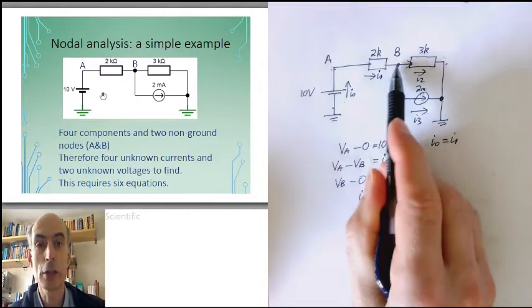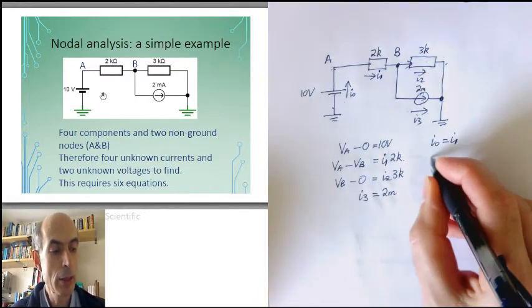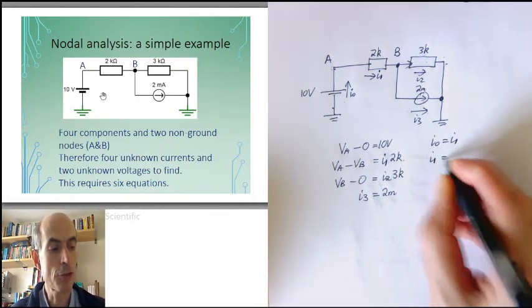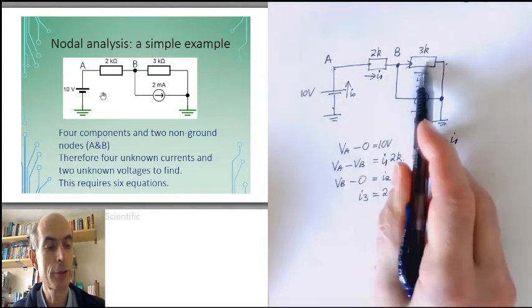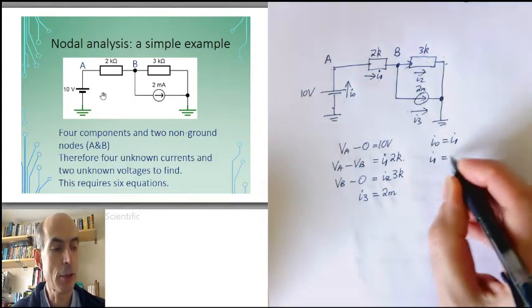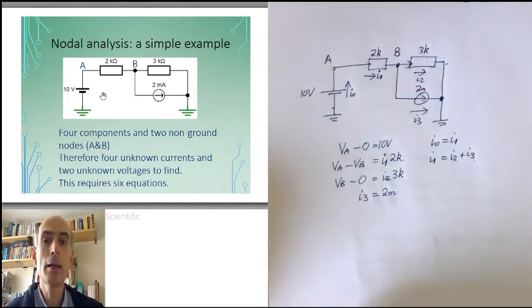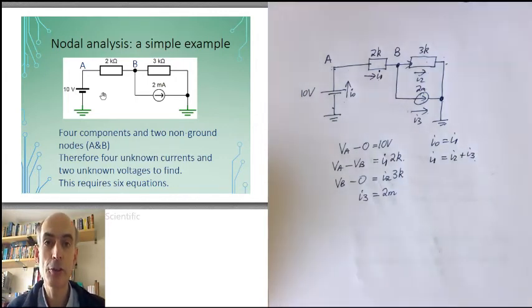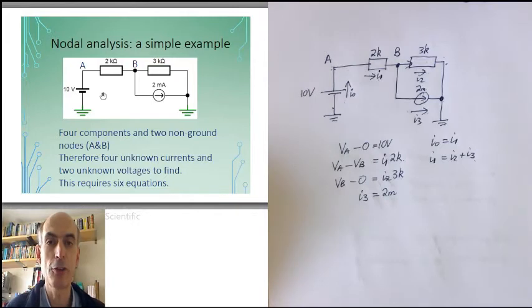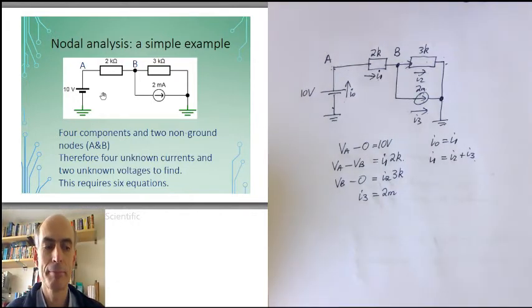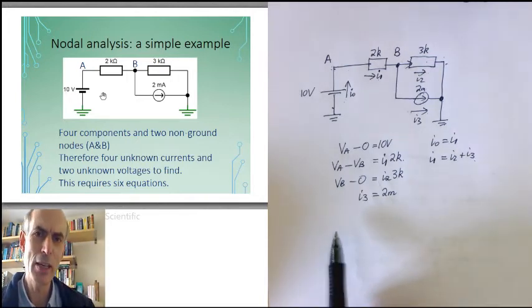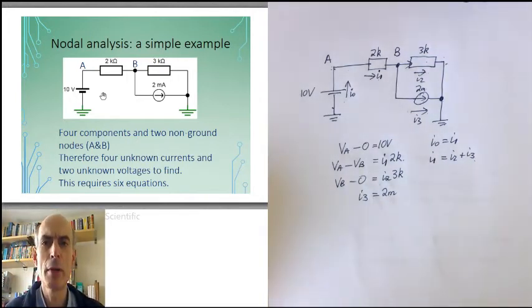Applying Kirchhoff's current law at node B, total current in is just I1, total current out is I2 plus I3. I now have a set of six simultaneous equations in six unknowns. I can start to solve them. And I'll do that by looking for ways in which I can reduce the number of the unknowns.